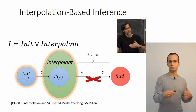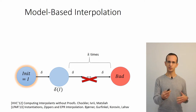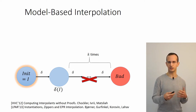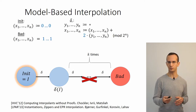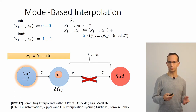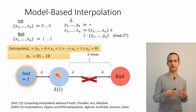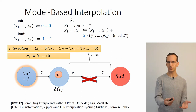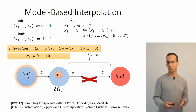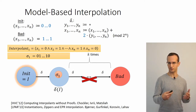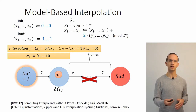Now I'm going to show a specific way of computing interpolants: a model-based way inspired by generalization in IC3 and PDR. In each step we sample a state from the post image and then write the conjunction that captures exactly that state. We know about this conjunction that every state satisfying it cannot reach a bad state in k steps of the system.